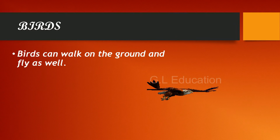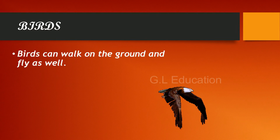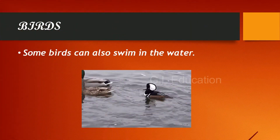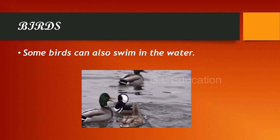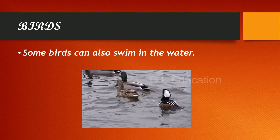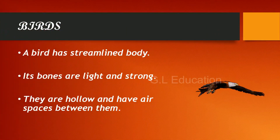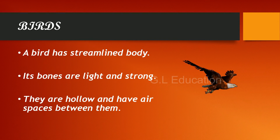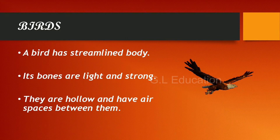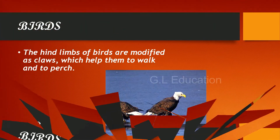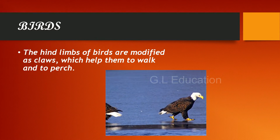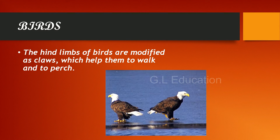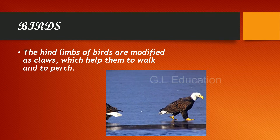Birds can walk on the ground and fly as well. Some birds can also swim in water. A bird has a streamlined body. Its bones are light and strong — they are hollow and have air spaces between them. The hind limbs of birds are modified as claws, which help them to walk and to perch.